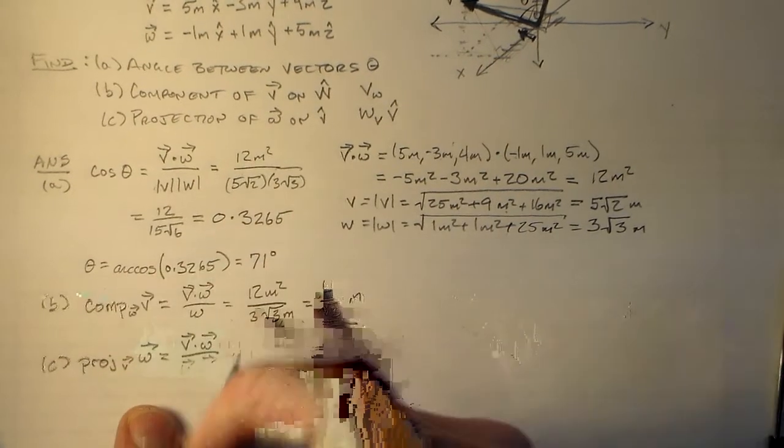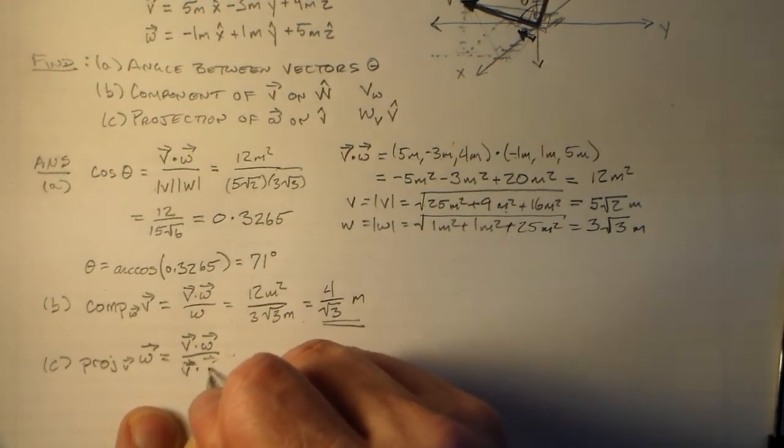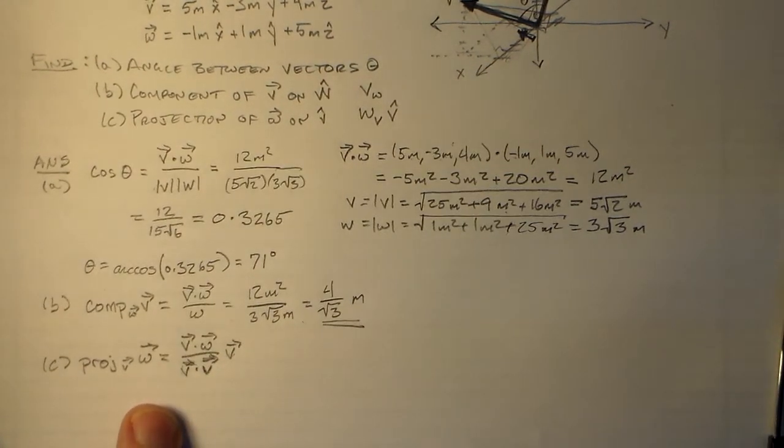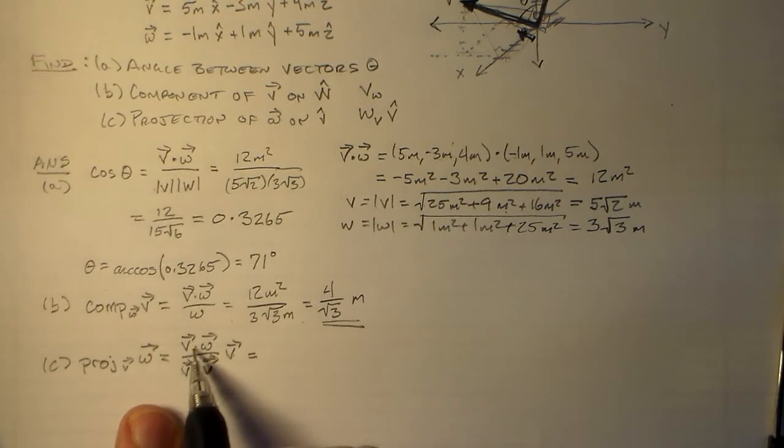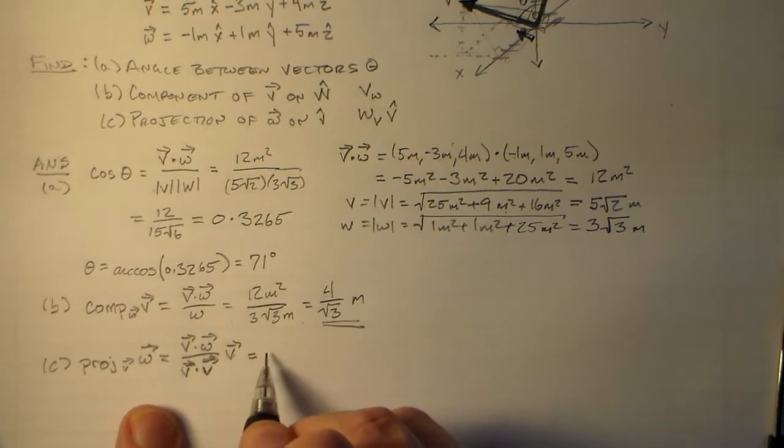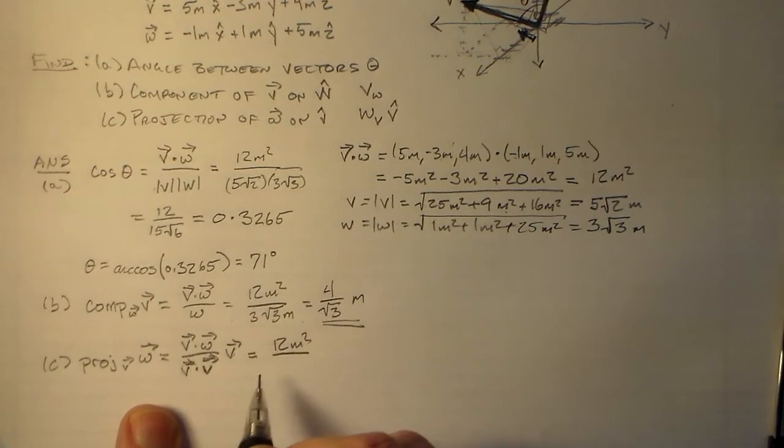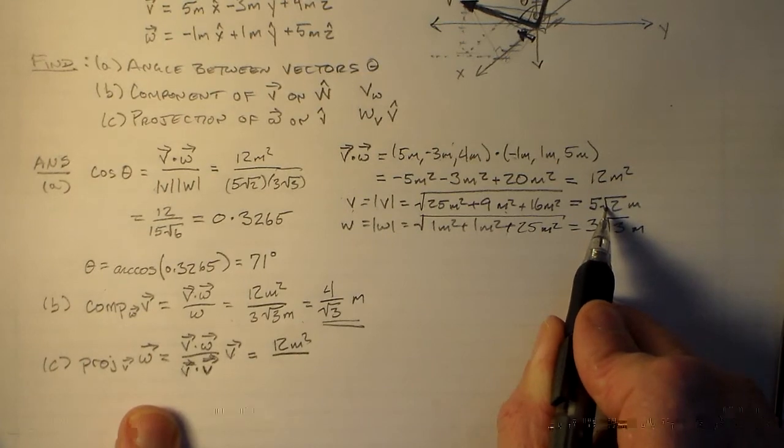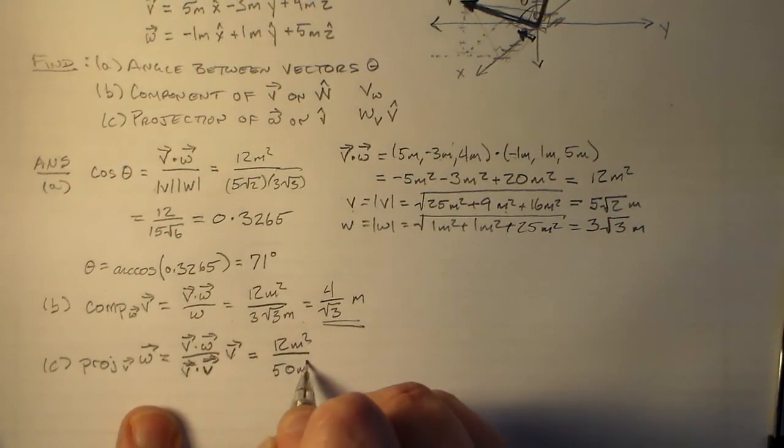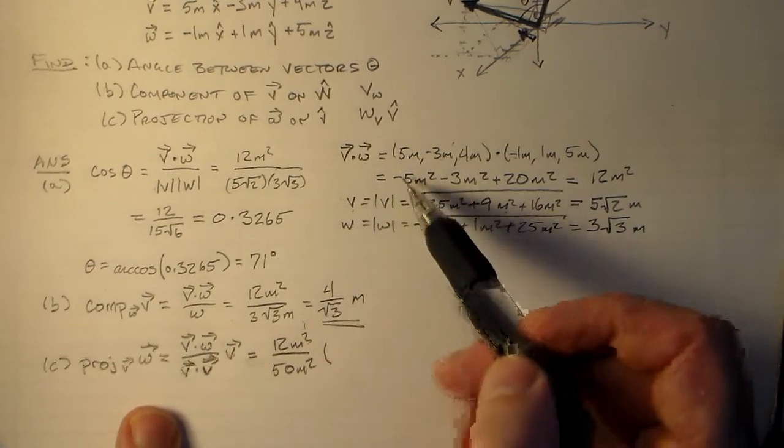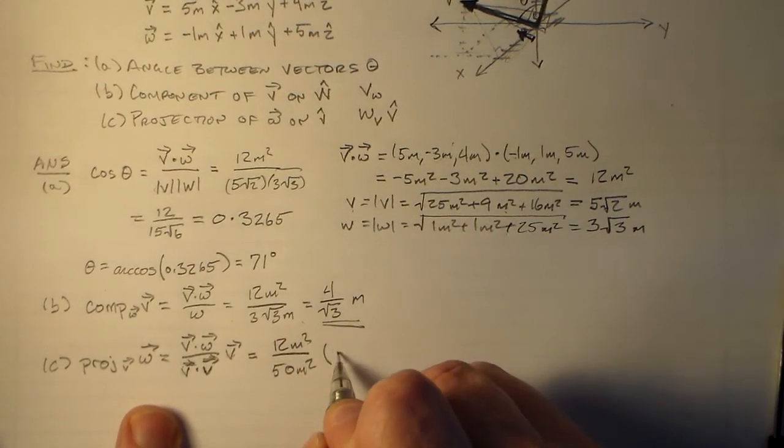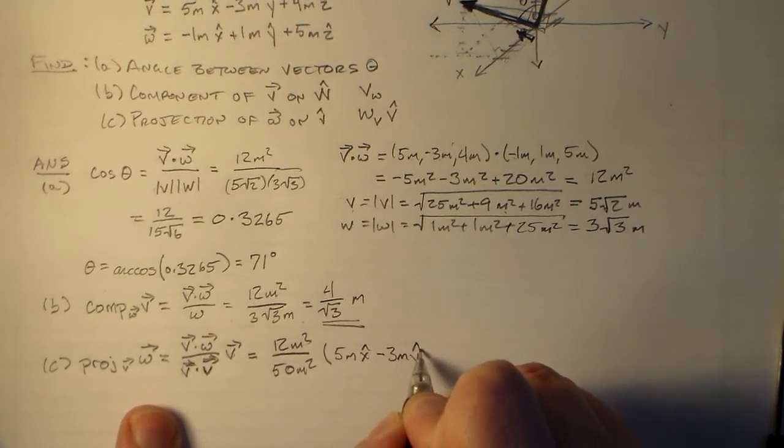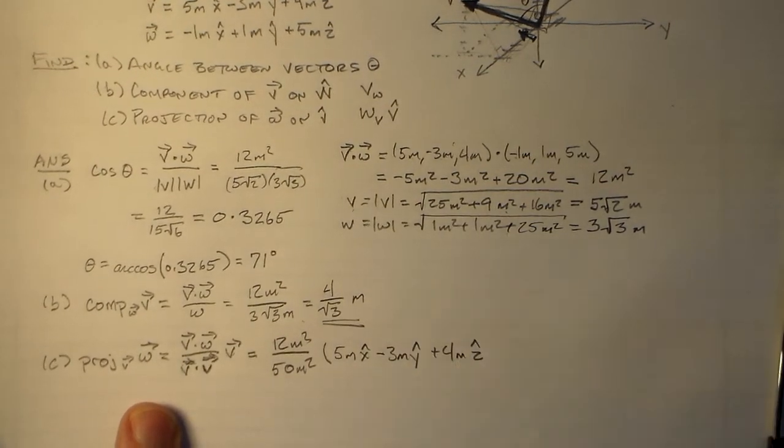We want the component of W in the direction of V, so, see, I got that all screwed up. That's why you need to practice your stories. All right, so, what do we have for that? V dot W, okay, V dot W is 12 meters, 12 square meters, we said. V dot V is just the square of this, which is 50 square meters. And V is this vector up here, 5 minus 3, 4. So 5 meters in the x direction, minus 3 meters in the y direction, plus 4 meters in the z direction, okay?